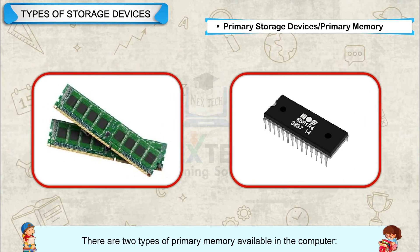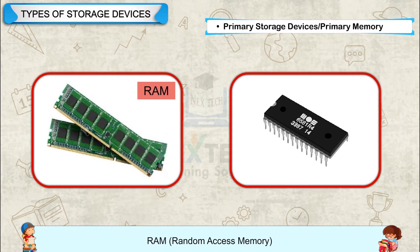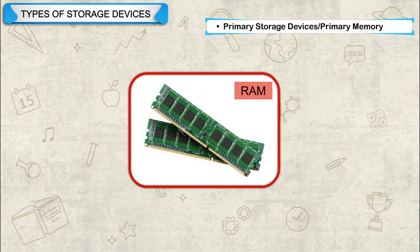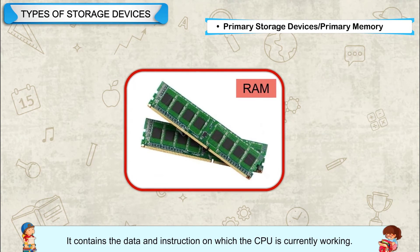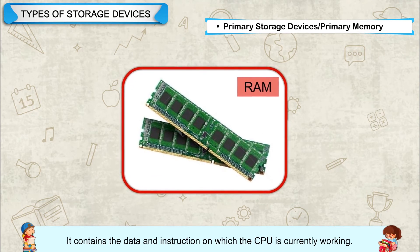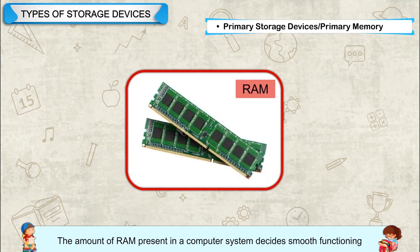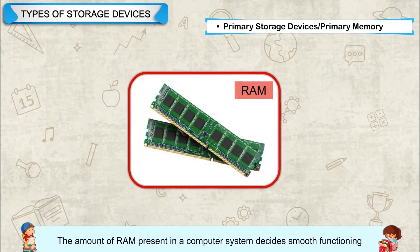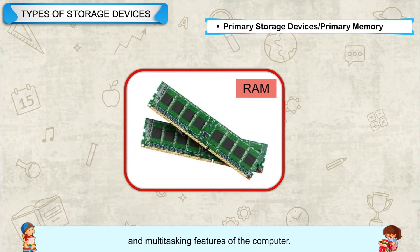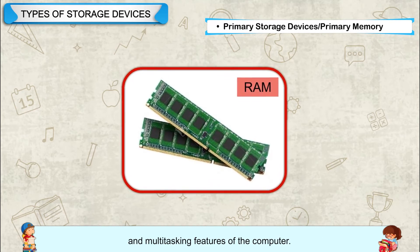The CPU continuously reads instructions stored there and executes them as required. There are two types of primary memory available in the computer: RAM (Random Access Memory) and ROM (Read Only Memory). RAM contains the data and instructions on which the CPU is currently working. It is volatile. The amount of RAM present in a computer system decides the smooth functioning and multitasking features of the computer.